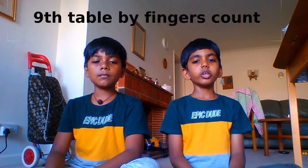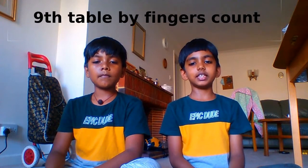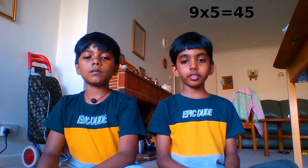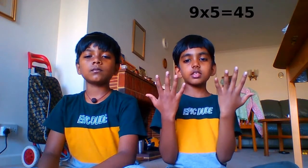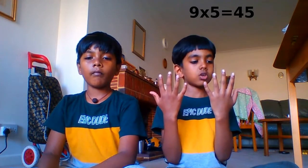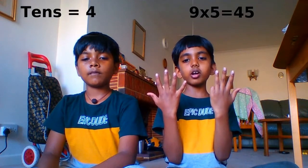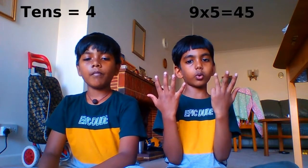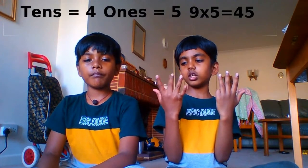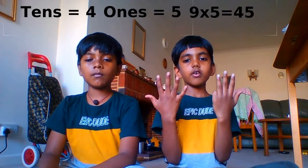Now I'm going to teach you how to do the nine times table with your fingers — very easy. For example, let's take nine times five. First take your hands and close the fifth finger. Now count how many tens there are: one, two, three, four — four tens. And ones: one, two, three, four, five — five ones.